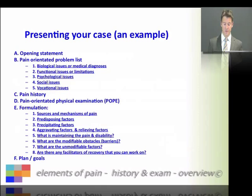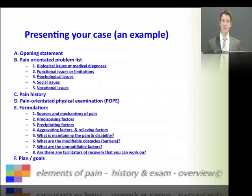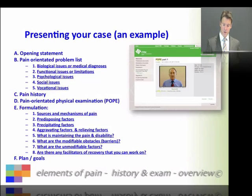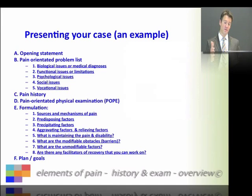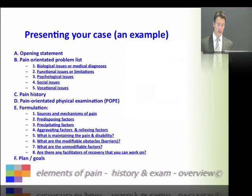You may or may not choose to present your pain-oriented problem list — some of you may choose to do this if there's a whole list of problems, all of relevance to the pain. Consider each one in turn. You could consider this as part of your flag system: your biological issues, functional issues, psychological issues, and social and vocational issues. For example, the pain-oriented problem list might go something like this: there are medical, functional, and psychosocial issues I'd like to mention.